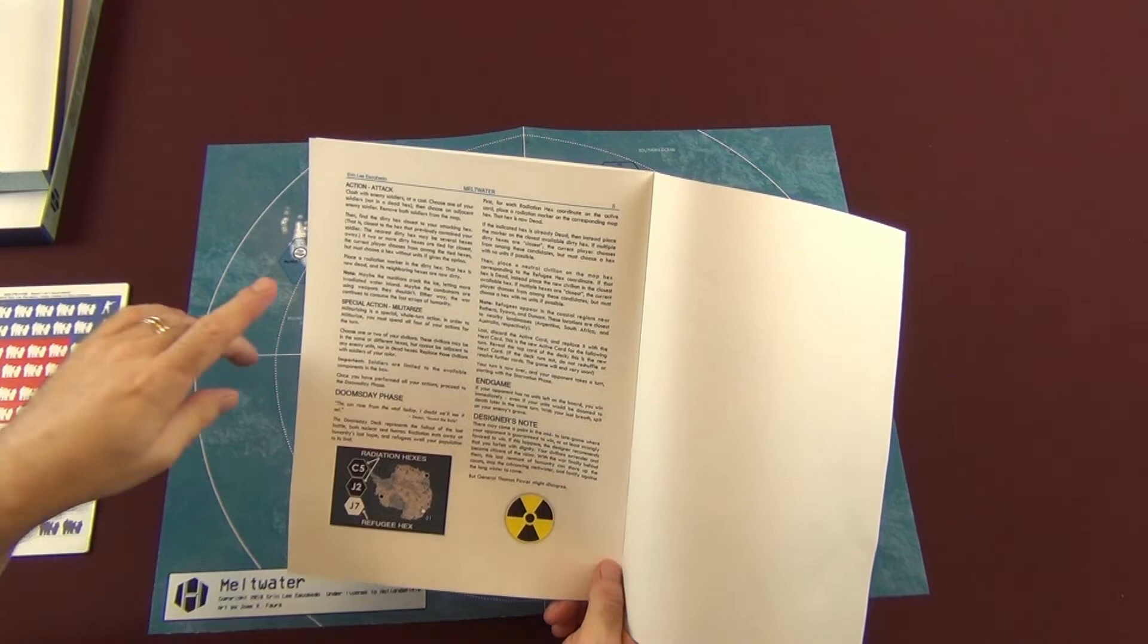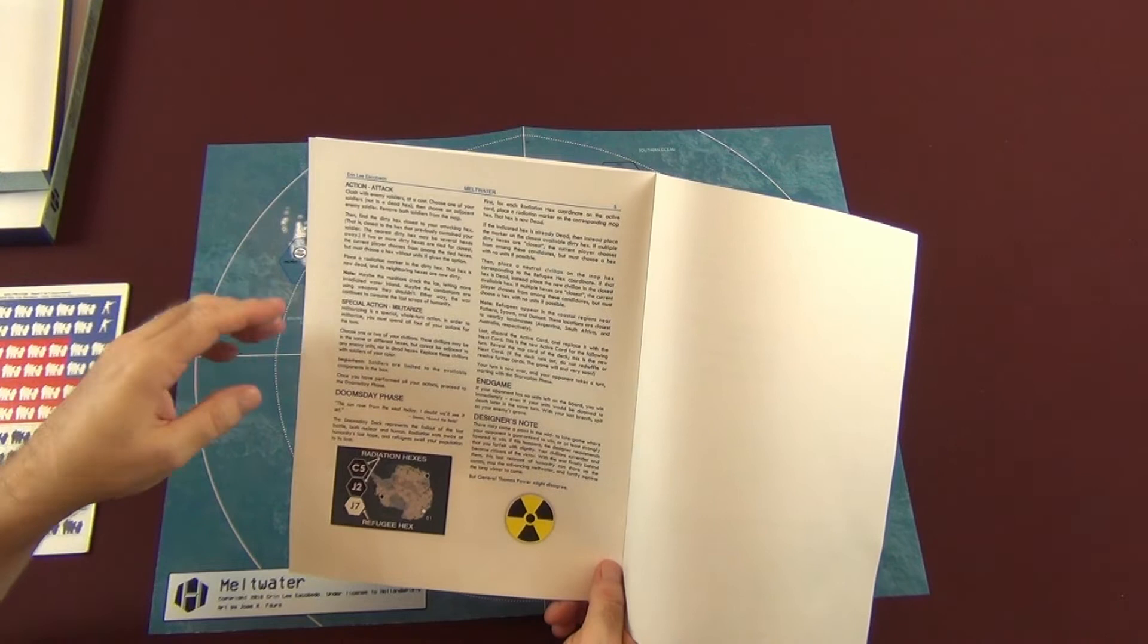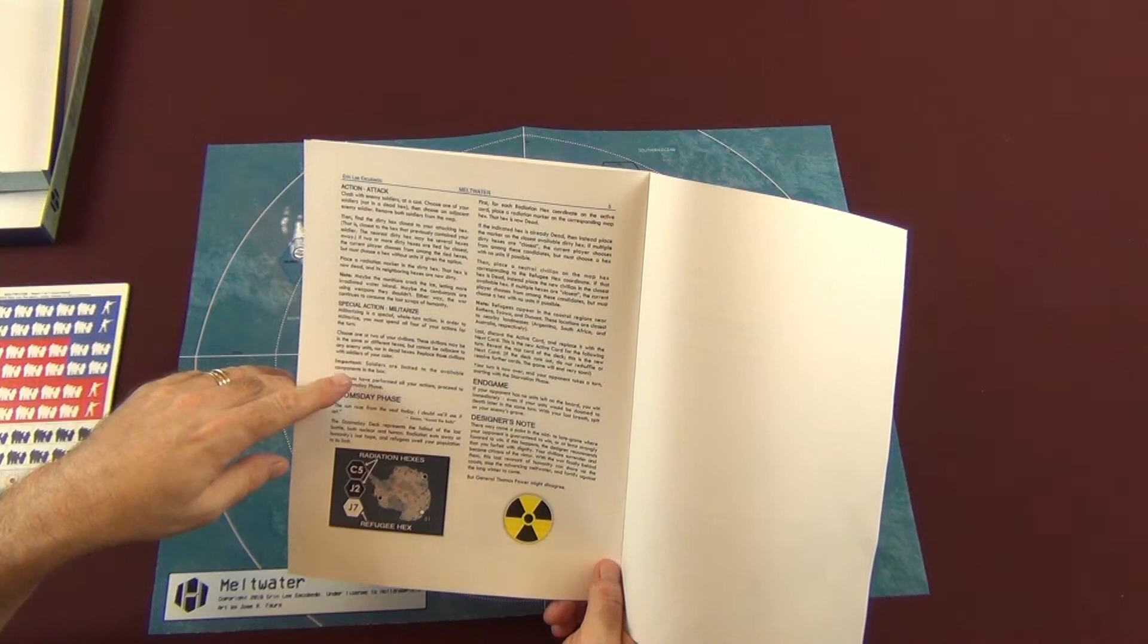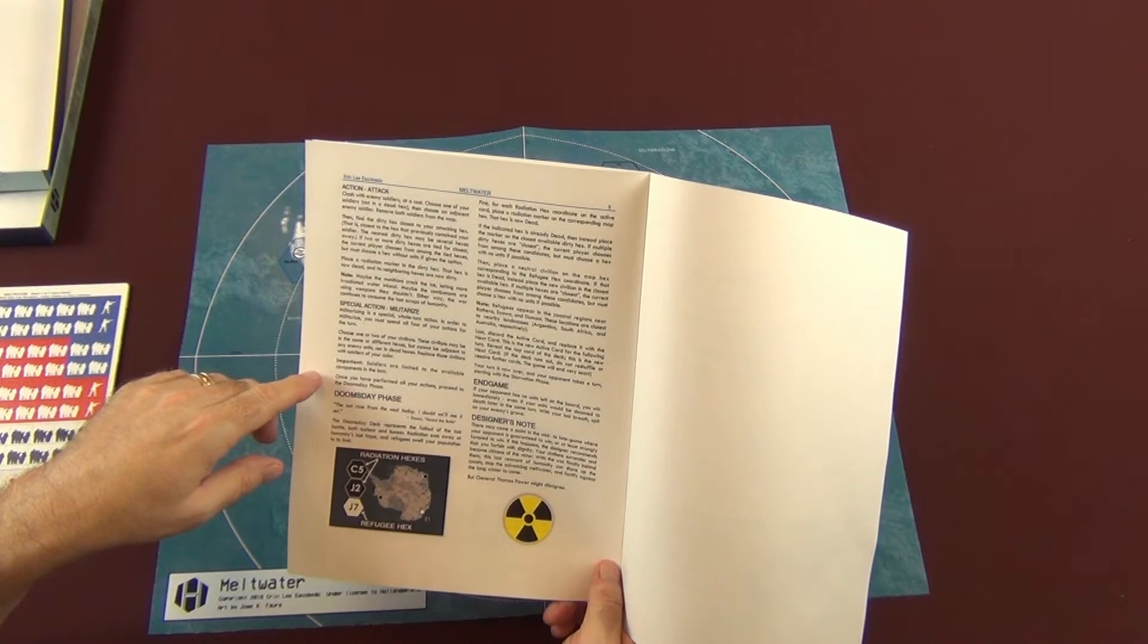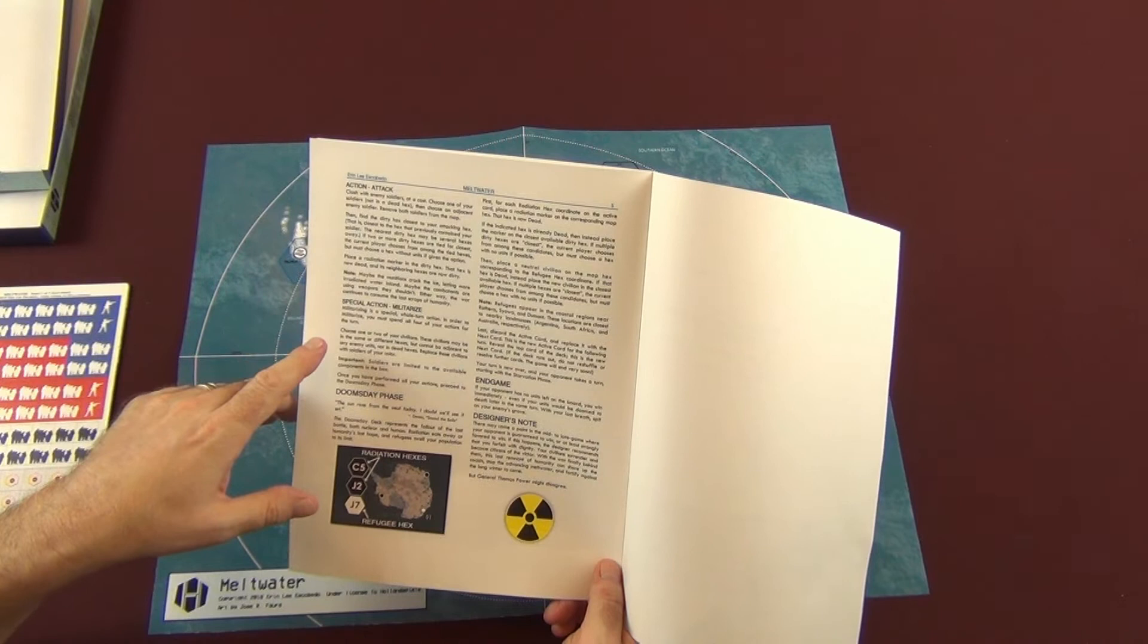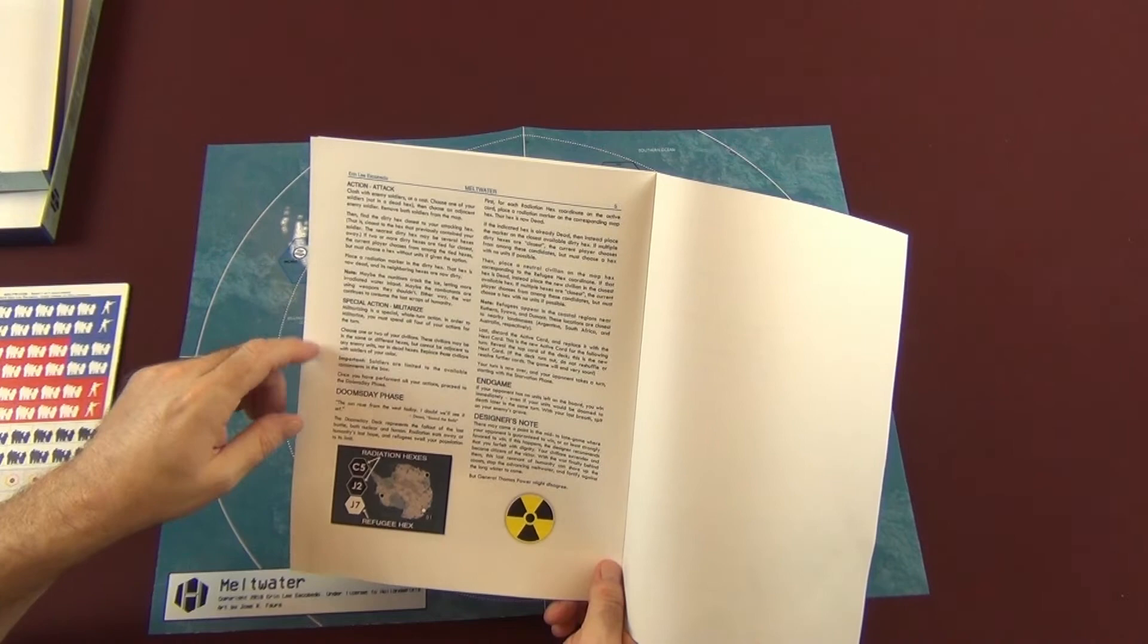Then you have militarize, which is where you use all of your actions in the phase. That's all four actions in the phase. And you'll choose one or two of your civilians. They are replaced with soldiers and these are also piece limited to components in the box. So you only have a certain amount of soldiers that you can use, but you're basically training up your civilians to be from just civilians to military.